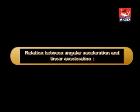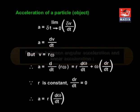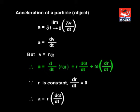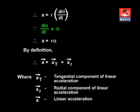Relation between angular acceleration and linear acceleration. The acceleration of a particle is equal to the limit as delta t tends to 0 of delta v upon delta t, that is a = dv/dt. Since v = rω, we get a = d(rω)/dt = r·dω/dt + ω·dr/dt. Because r is constant, dr/dt = 0, therefore a = r·dω/dt. Since dω/dt = α, therefore a = rα.